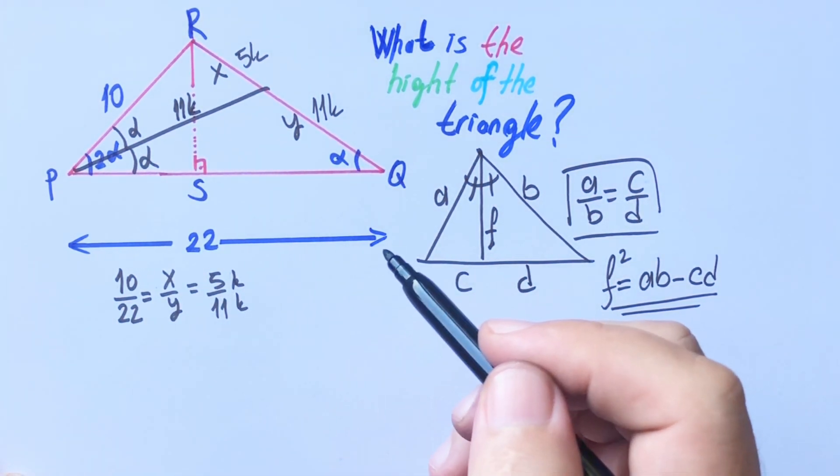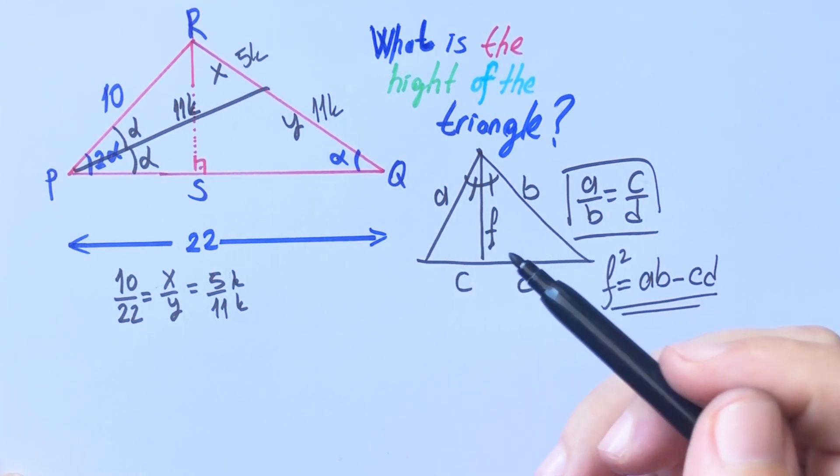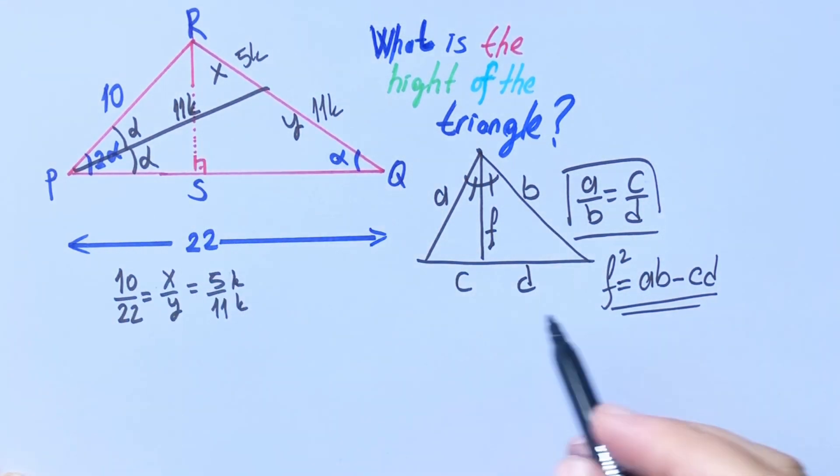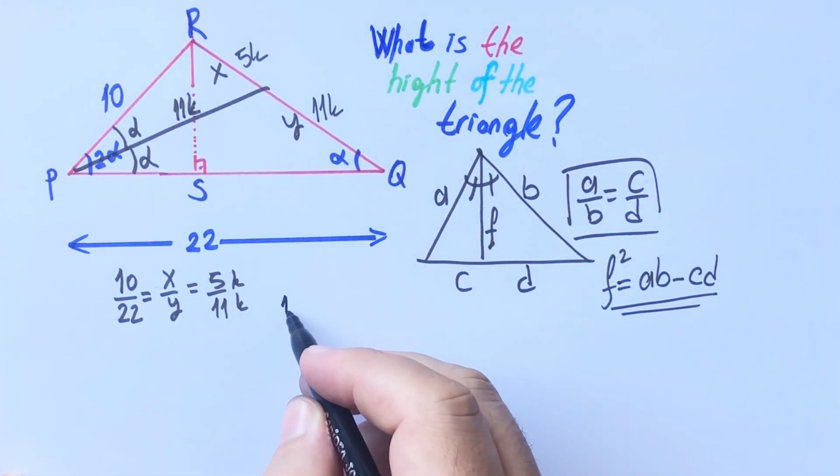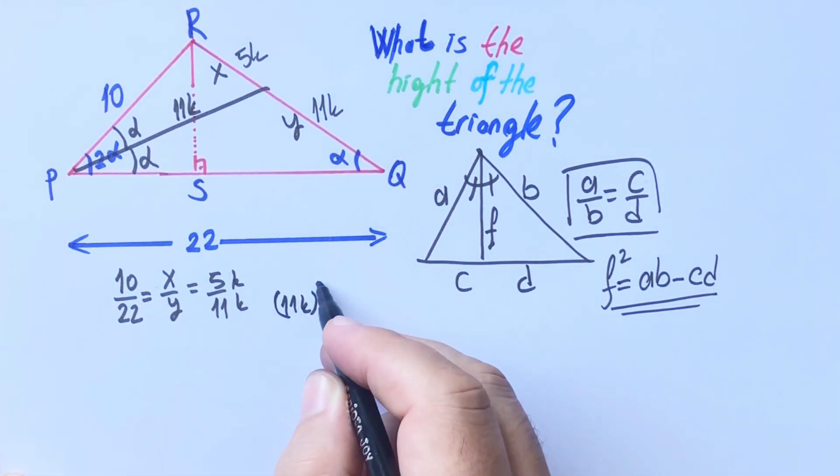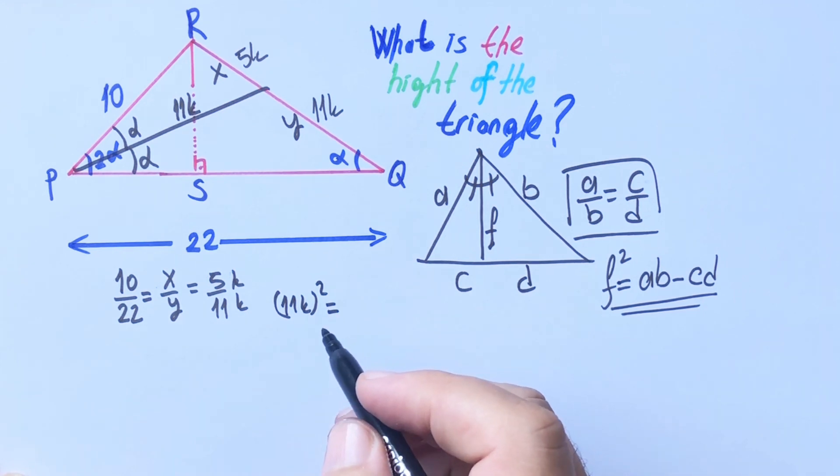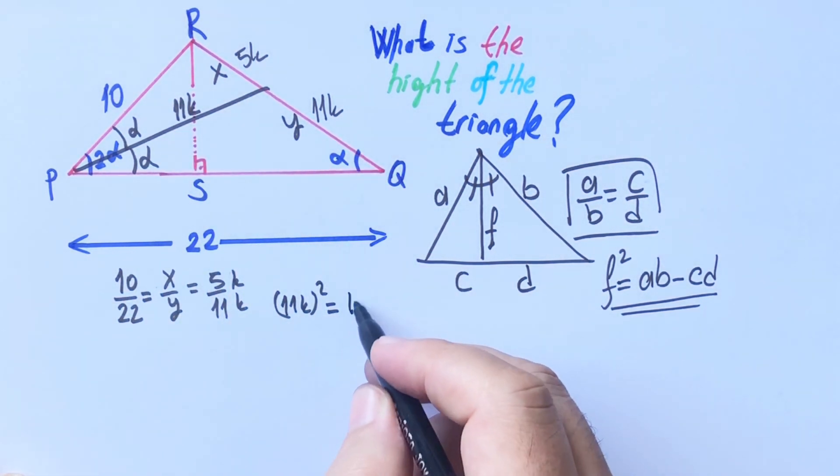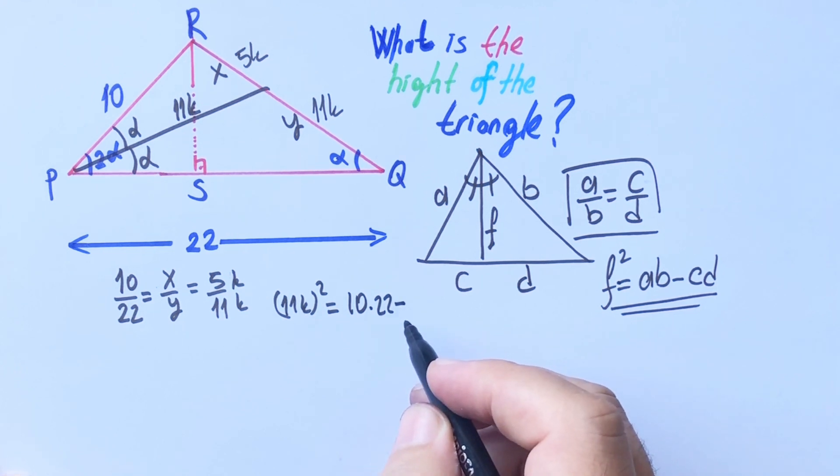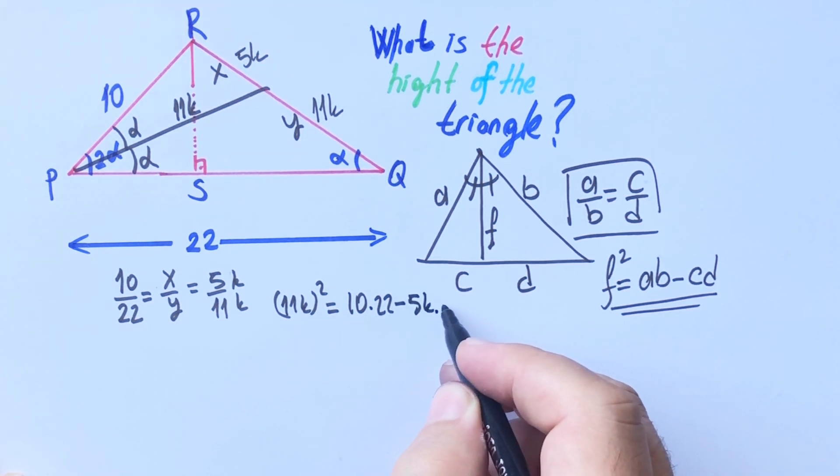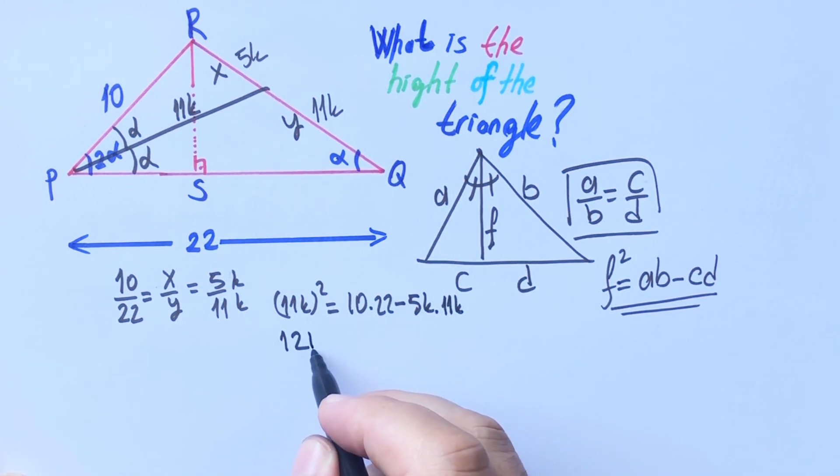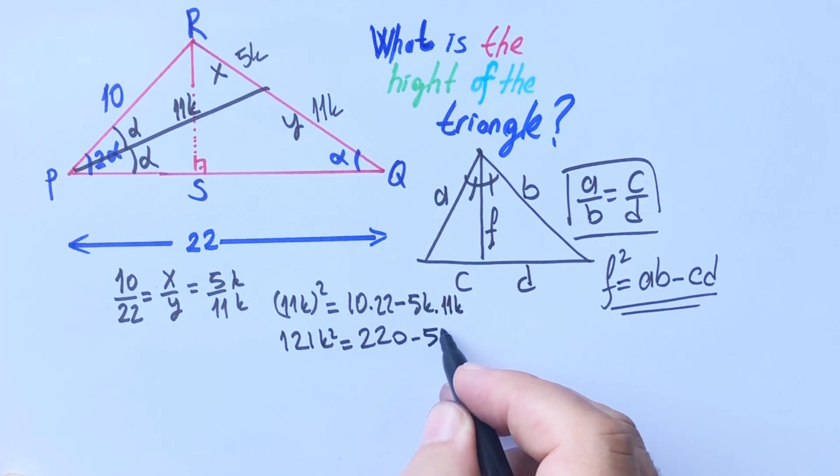If we apply the formula to the question, this formula, 11k here, so 11k squared equal 10 times 22 minus 5k times 11k. 121 k squared equal 220 minus 55 k squared.